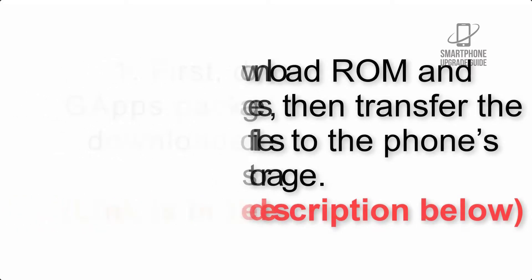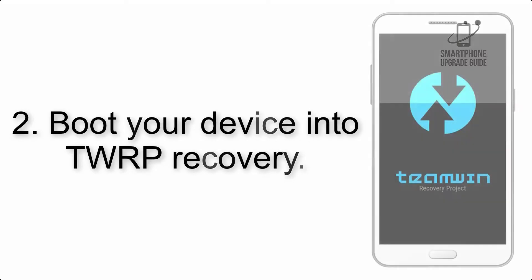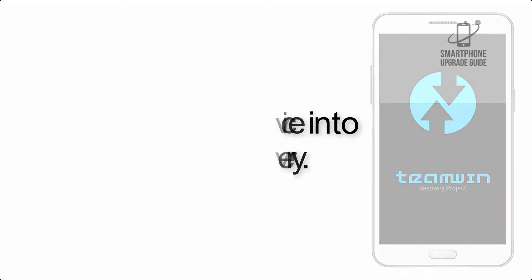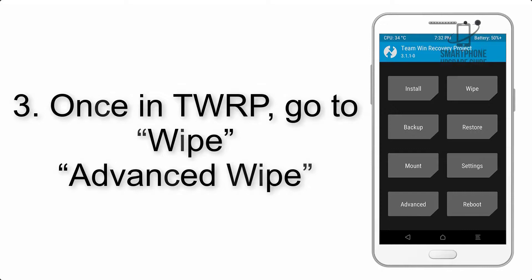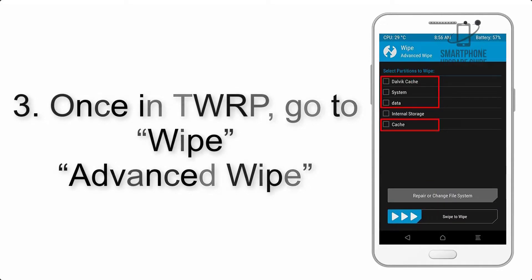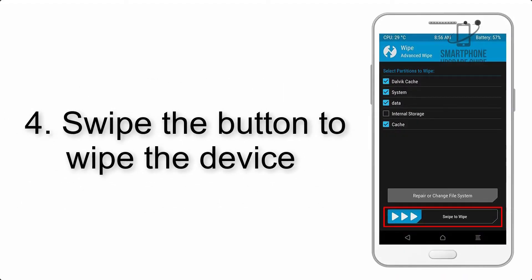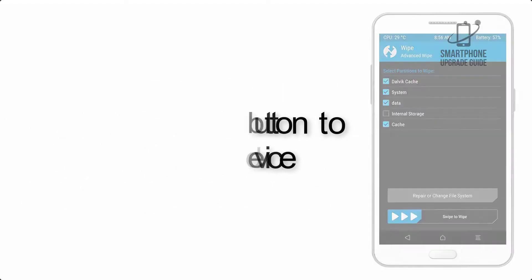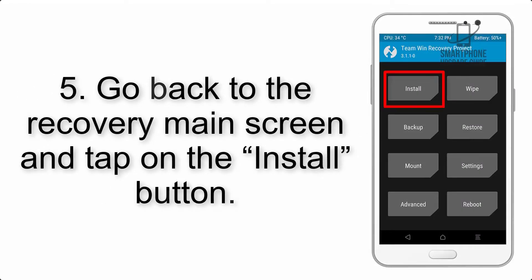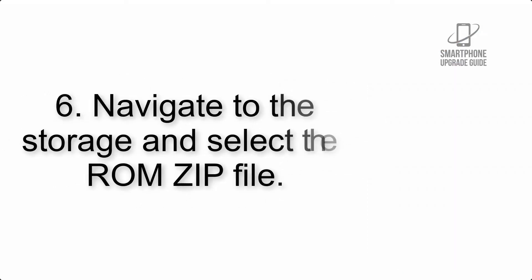Step 2: Boot your device into TWRP recovery. Once in TWRP, click on Wipe, then Advanced Wipe, and select the checkboxes as shown in the image, excluding internal storage. Step 4: Swipe the button to wipe the device.